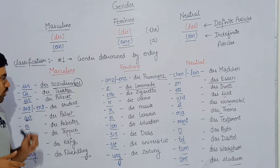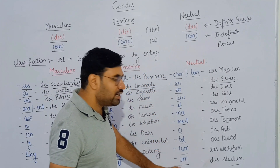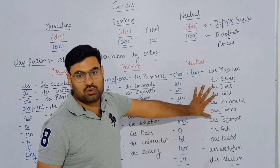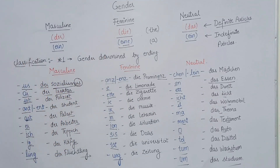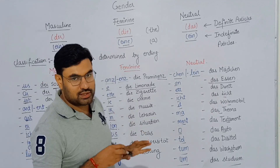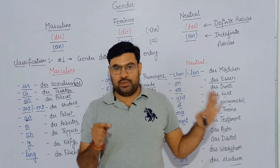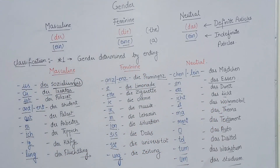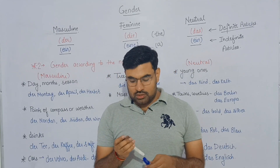No need to focus on the meaning of these words right now — focus on the endings. If a word ends with those neutral endings, 95% chance it's neutral. Endings for feminine — 95% chance feminine. Endings for masculine — 95% chance masculine. That is the first classification. Please pause the video and copy this down.